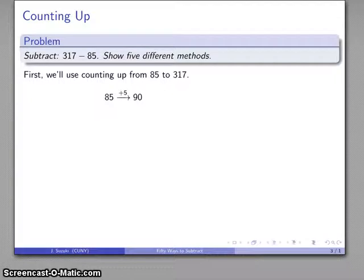So I'm going to try to count up from 85 to 317. I'm going to count up 5 to 90, 10 to 100, 200 to 300, and 17 up to 317. And so if I only know how to count and how to add, I can figure out what this subtraction is.